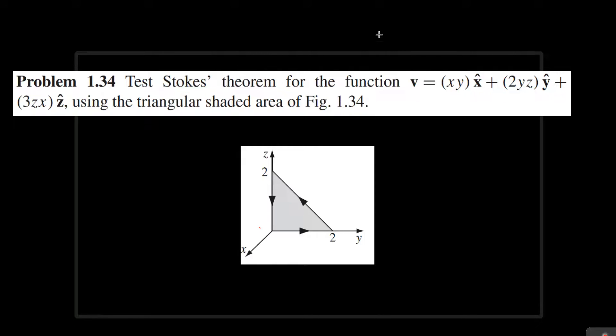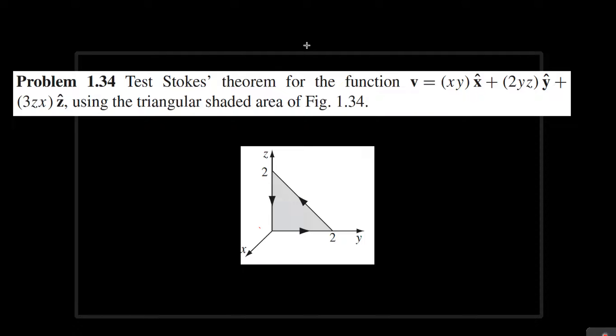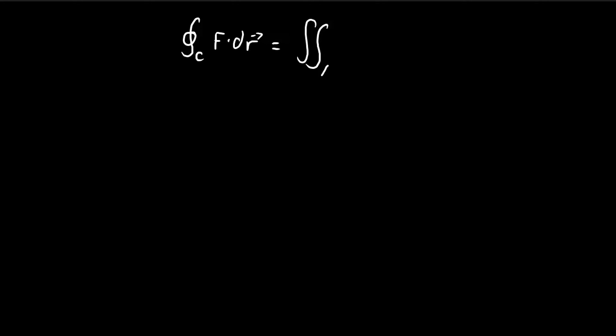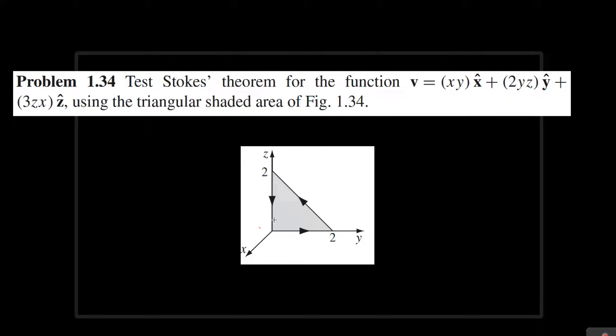Now let's try to verify Stokes' theorem for the situation here. First of all, let us remind ourselves what Stokes' theorem tells us. Stokes' theorem tells us that the line integral along a closed path is equal to the surface integral of the curl along the surface that is bound by the closed path.